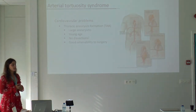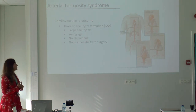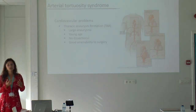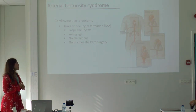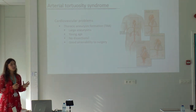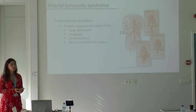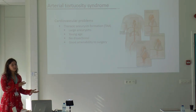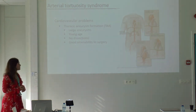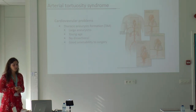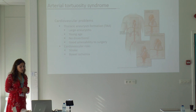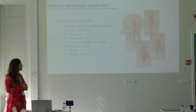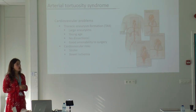Another important cardiovascular problem is that patients can form thoracic aneurysms — dilatations mainly of the large artery. These aneurysms can be very large and can occur at young age; we saw them in small babies from a couple of months to children of about four years. However, we think they have a very good prognosis because none of the children had any dissections or ruptures. So we think they have good amenability to surgery and therefore a very good prognosis. Some other cardiovascular risks include stroke and ischemia of the bowel due to stenosis of the bowel arteries.